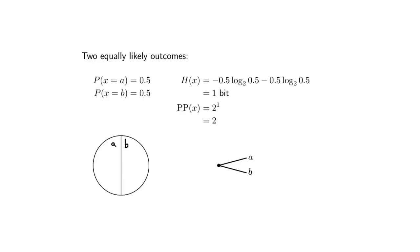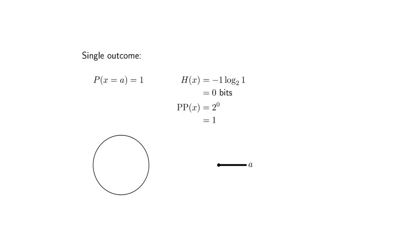Now simplify the dice to one side: just 'a', nothing else. How many bits do I need to communicate to you? Zero. You hear the dice land and shout 'a' because there's only one side. I transmit zero bits, and out of how many things are we choosing? Just one. This is the dumb example for a single-sided dice.